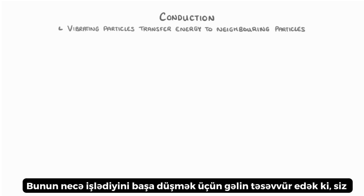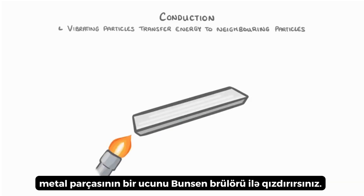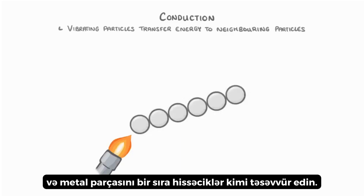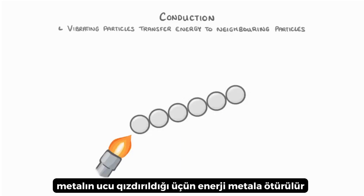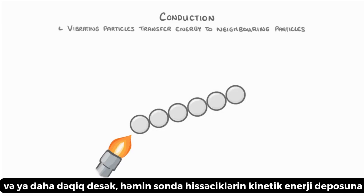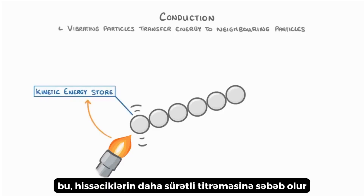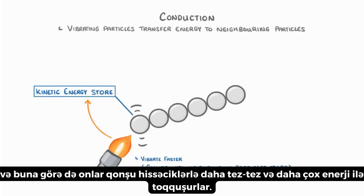To understand how this works, let's imagine that you are heating one end of a piece of metal with a Bunsen burner, and imagine the piece of metal as a series of particles. As the end of the metal is heated, energy is transferred to the kinetic energy store of the particles at that end. This causes the particles to vibrate faster, and so they collide with their neighbouring particles more often and with more energy.